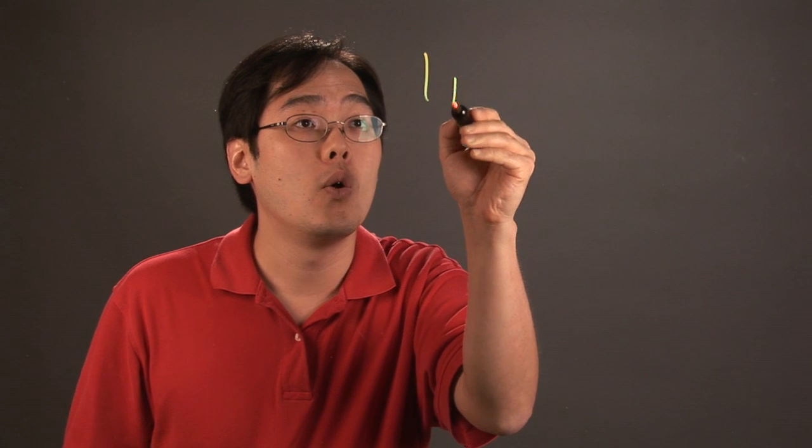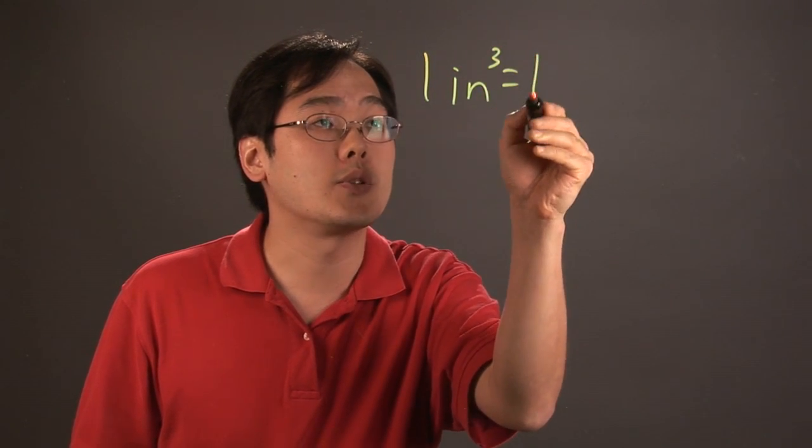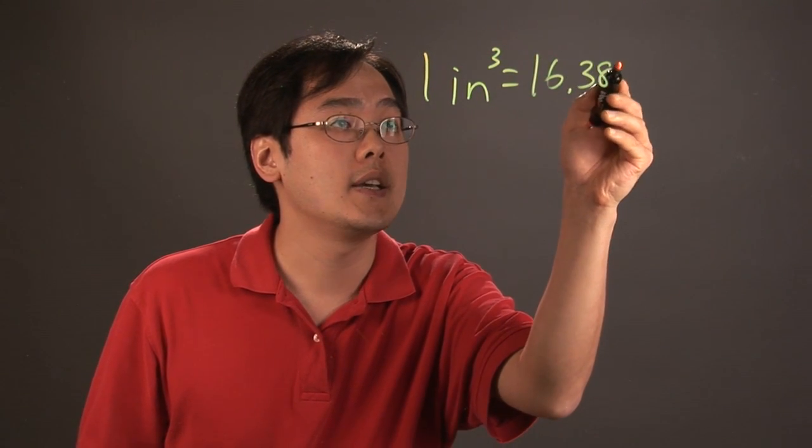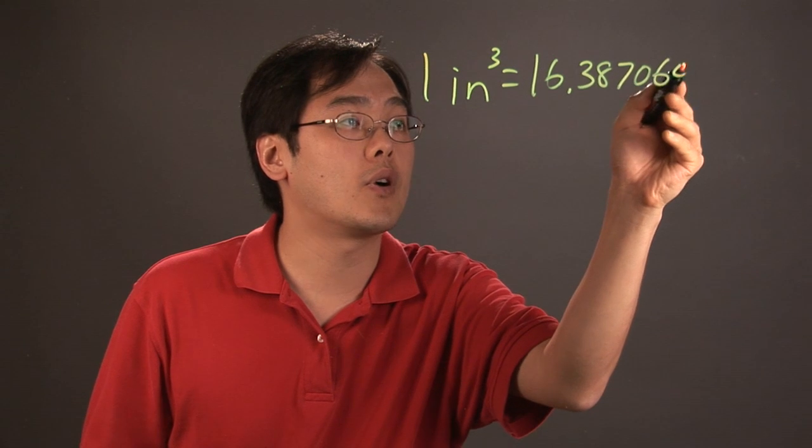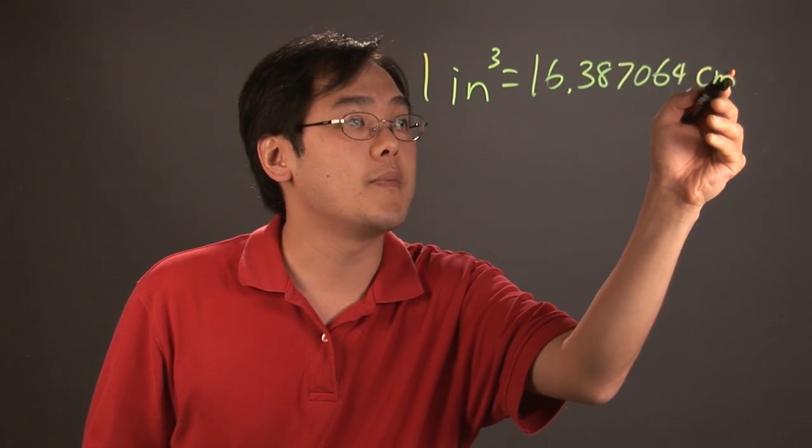So here's the actual cubic inches to cubic centimeters conversion. One cubic inch is equal to 16.387064 centimeters cubed.